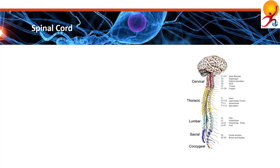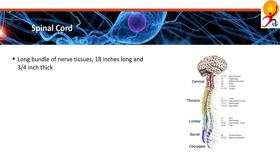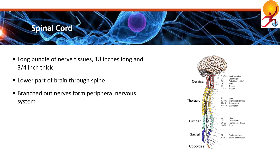The spinal cord is a long bundle of nerve tissue about 18 inches long and three-quarters of an inch thick. It extends from the lower part of the brain down through the spine, and along the way various nerves branch out to the entire body — these are called the peripheral nervous system.